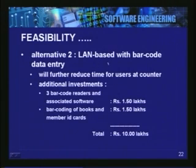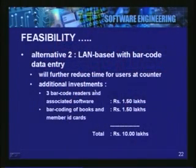We consider a second alternative where instead of doing data entry manually at the counter, we would use bar coding so that books can be bar coded as well as the member identity cards. This will avoid data entry time at the counter and may also reduce errors. In this case there is some additional investment required: 3 bar code readers may have to be purchased at an additional cost of 1.5 lakhs, and there is a cost of bar coding the books and member identity cards of another 1.5 lakhs, plus the 7 lakhs of systems and development. The total cost for alternative 2 becomes 10 lakh rupees.